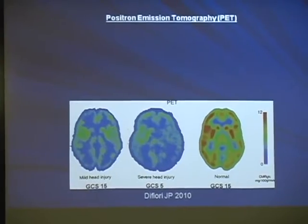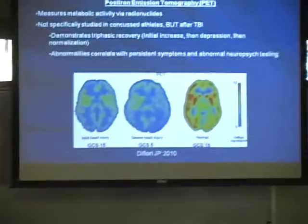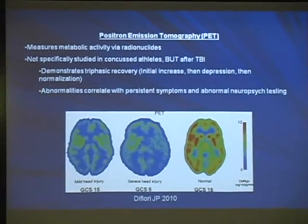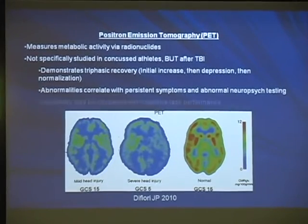PET scans, usually associated with cancer, can also look at metabolic activity in the brain by measuring radioactive substance concentrations. While not yet studied specifically with concussions, studies with other traumatic brain injuries show a triphasic recovery: first increased brain activity as the cell tries to pump potassium back in, then a depressed phase where it can't function well, then gradual normalization. This triphasic recovery correlates with symptoms. PET scans may become a useful concussion tool since concussions are mainly a functional problem requiring functional tests.